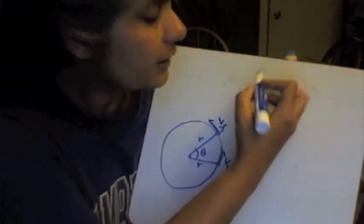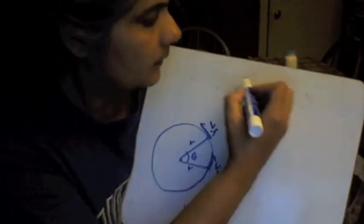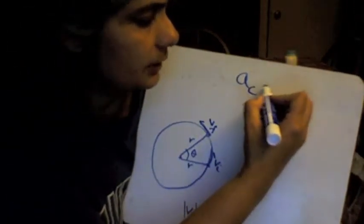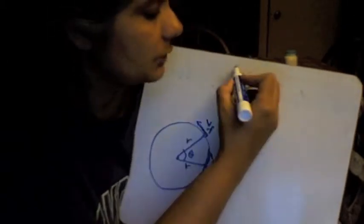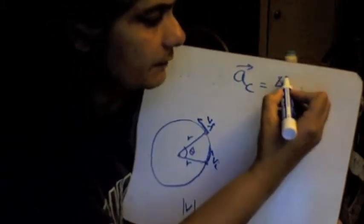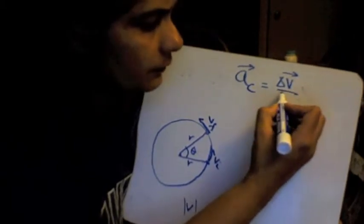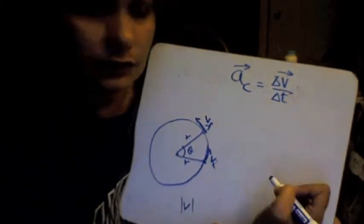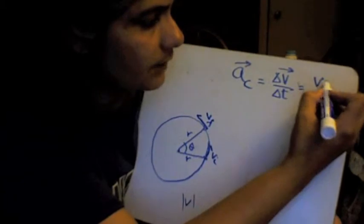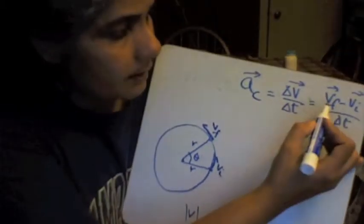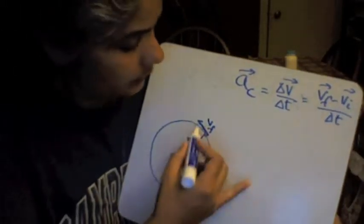So what we're looking for is the rate of change of velocity. That would be the acceleration, AC, centripetal acceleration, which is a vector quantity, is given by change in velocity over time. Rate of change of velocity with time, which is V final minus V initial, to a vector subtraction using these vectors.